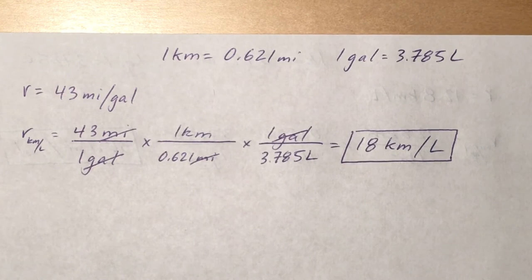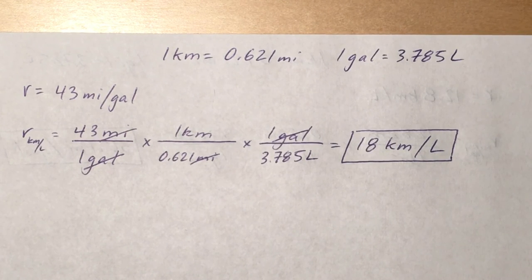Now remember the number of significant figures has to be two, because two significant figures was given in the problem at 43 miles per gallon. So the final answer has to only have two significant figures at 18 kilometers per liter.